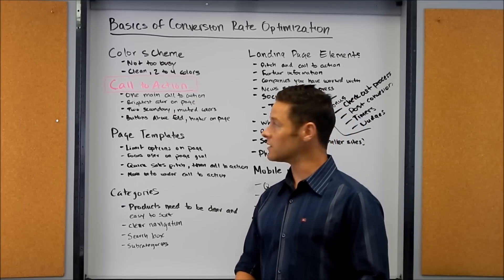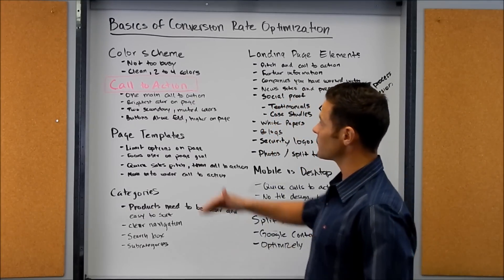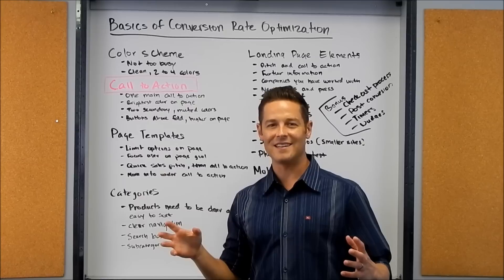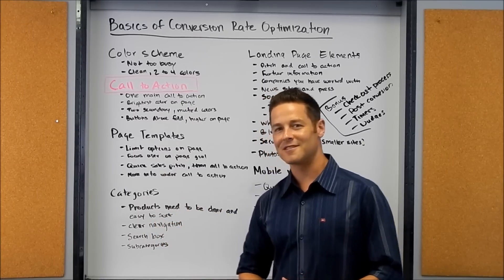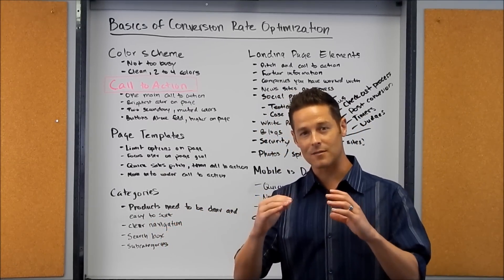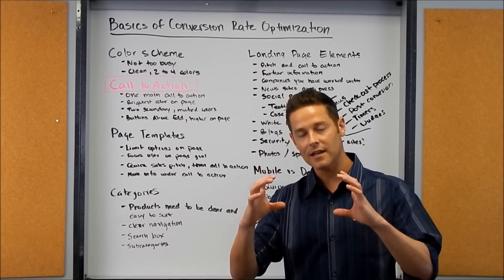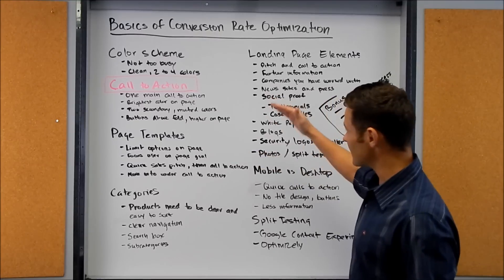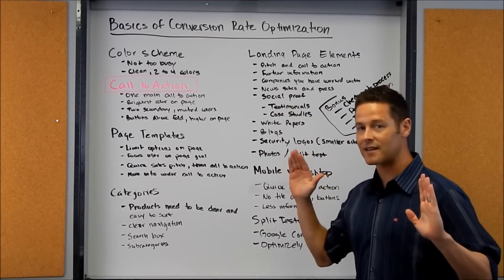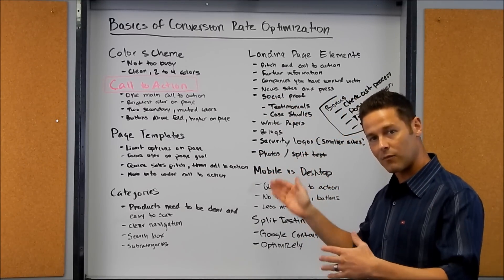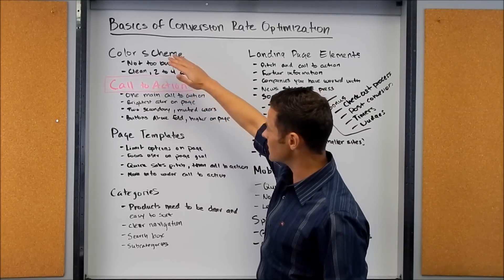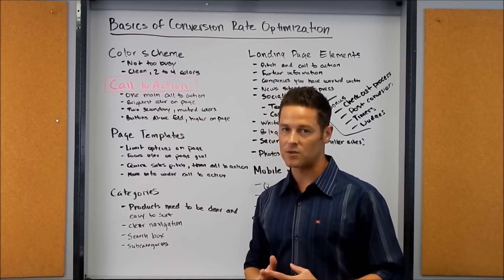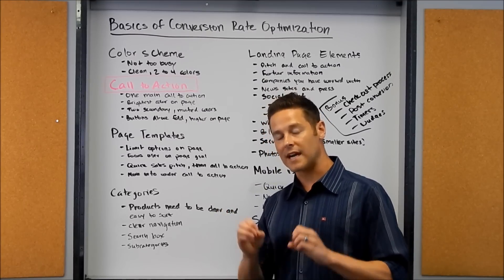So the first thing for your website: make sure that you have a really basic color scheme. We're not back in the 80s with those bright techno colors anymore. You want everything to be very muted, very clean. The main thing that you want to jump out is your call to action. Keep it simple — only two to maybe four colors total on your page.